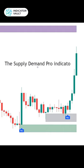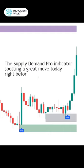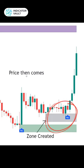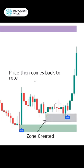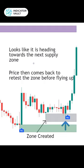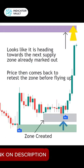We have an example for you. The supply-demand-pro indicator predicted a big change and made its move today, just before the news came out. Before flying, price returns to retest the zone, and it seems that it is already on its way to the next supply zone, which is extremely accurate.